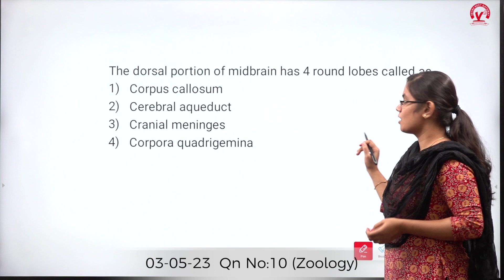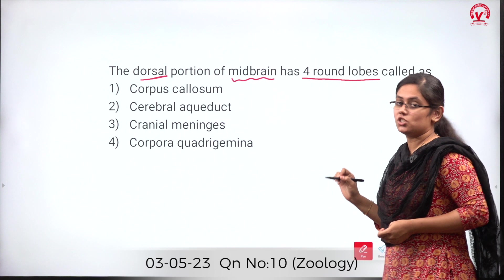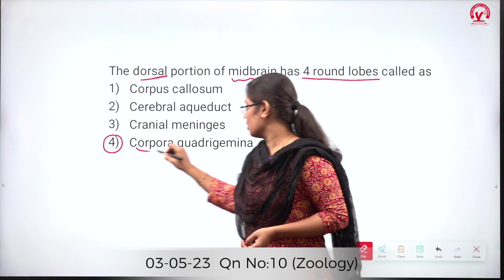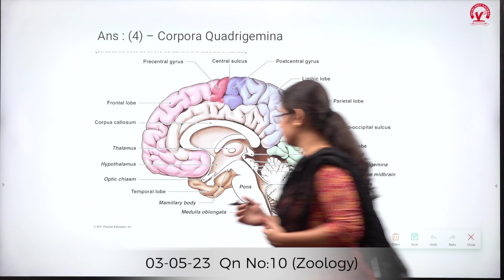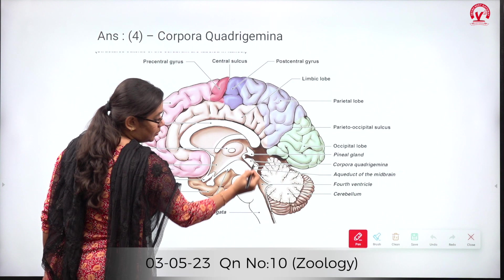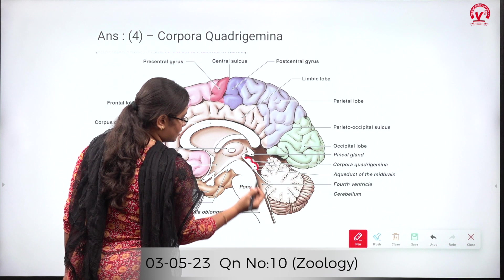The dorsal portion of the midbrain has four round lobes. The options are corpus callosum, cerebral aqueduct, cranial meninges, and corpora quadrigemina. The correct answer is option 4, corpora quadrigemina. In the right hemisphere of the brain, the midbrain region has a dorsal portion called the tectum, which consists of four round bodies called corpora quadrigemina. 'Quadri' means four, and they are also called colliculi — divided into superior and inferior colliculi.